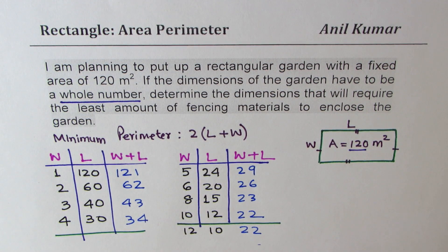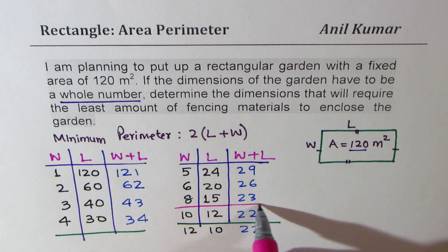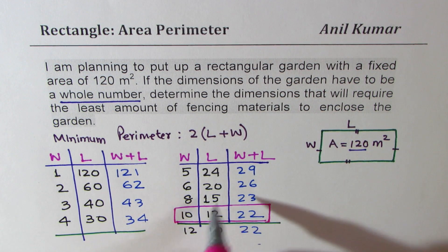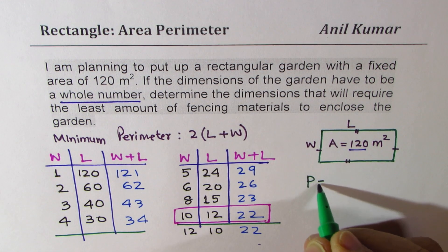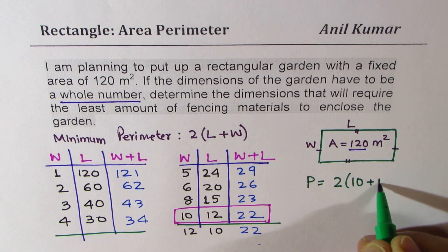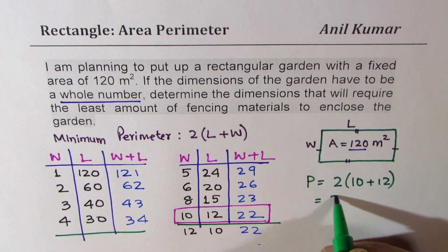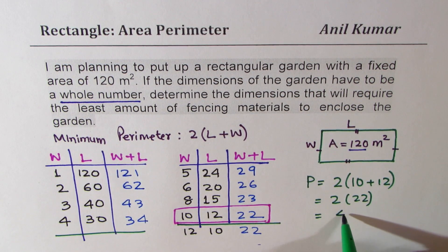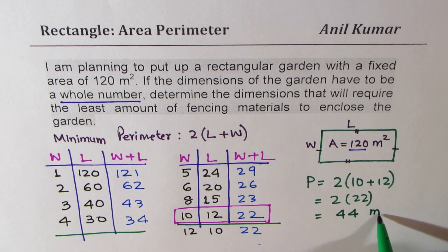And this will also give us 22. So what we see here is that the combination 10 and 12 gives you the minimum combination of width and length. Perfect. And what is going to be the perimeter? So perimeter is going to be 2 times 10 plus 12,